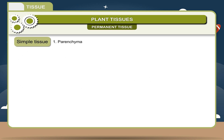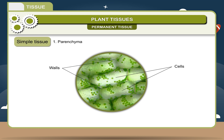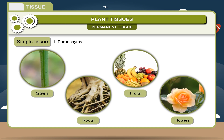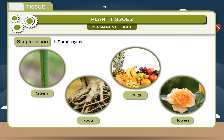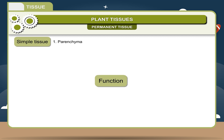1. Parenchyma. The cells of this tissue are living, and may be spherical, oval, or polygonal in shape. They are thin-walled and loosely arranged. Location: it is the most abundantly found tissue and is present in stem, roots, fruits, and flowers.